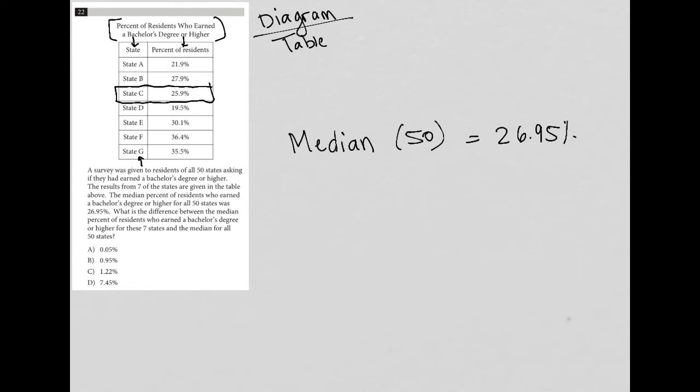What is the difference between the median percent of residents who earned a bachelor's degree or higher for these seven states and the median for all 50 states? So I need to figure out, well, what's the median for these seven states that are here? A median is just the middle number. So if I were to list out these percentages from smallest to largest.